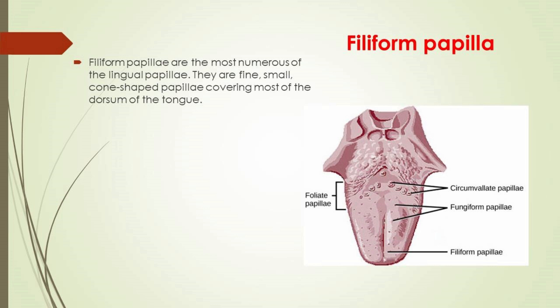Filiform papillae are the most numerous of the lingual papillae. They are fine, small, cone-shaped papillae covering most of the dorsum of the tongue. They are responsible for the texture of the tongue and the sensation of touch. Unlike other papillae, filiform papillae do not contain taste buds. They cover most of the front two-thirds of the tongue surface, appearing as very small conical or cylindrical projections arranged in rows parallel to the sulcus terminalis.